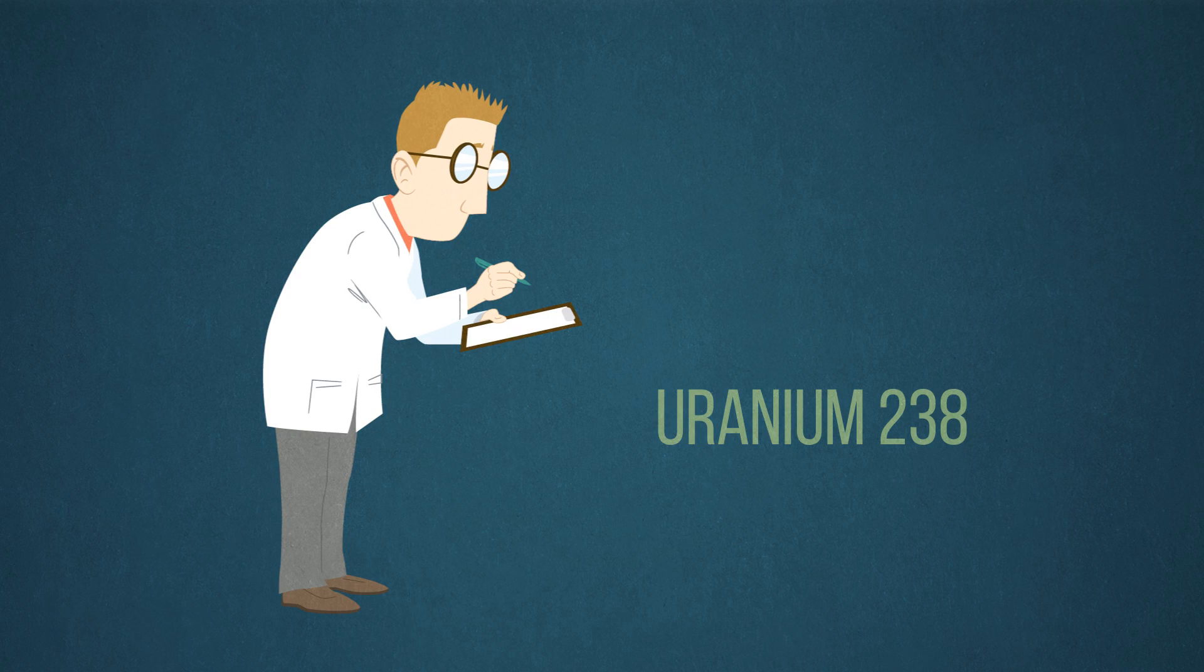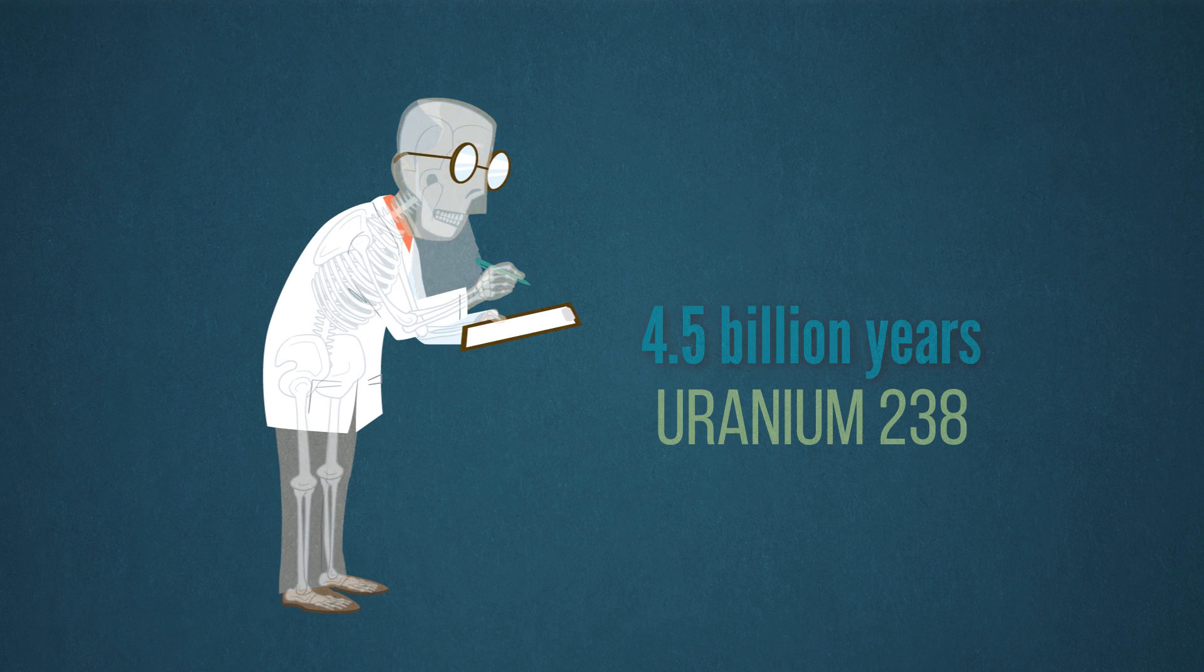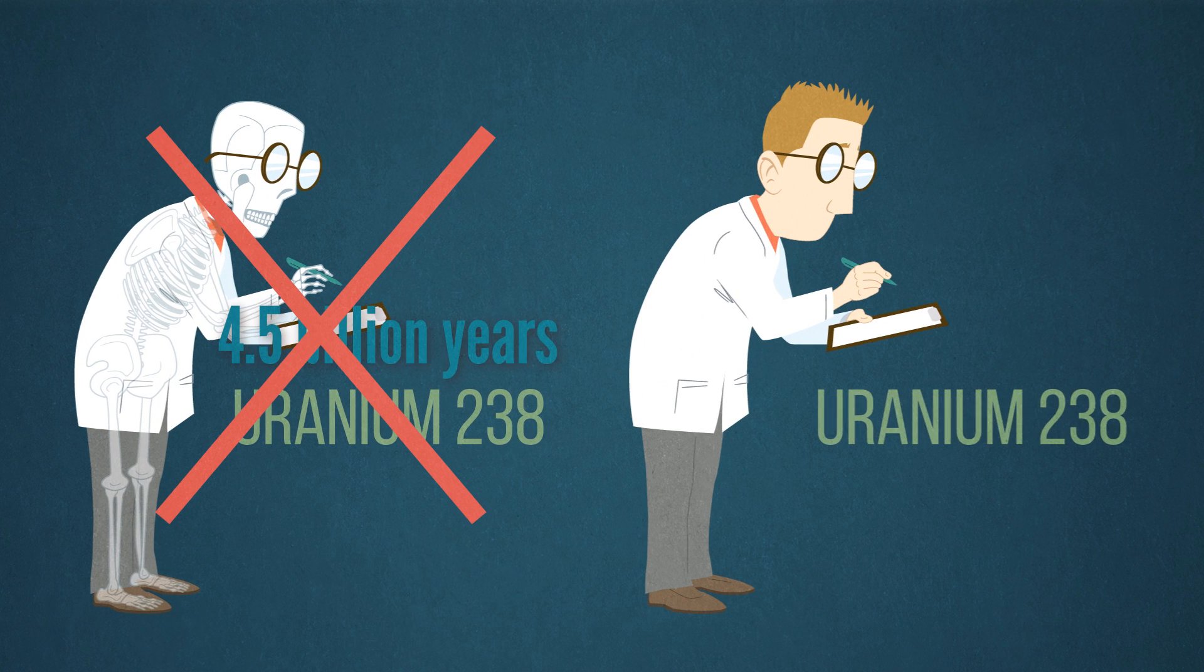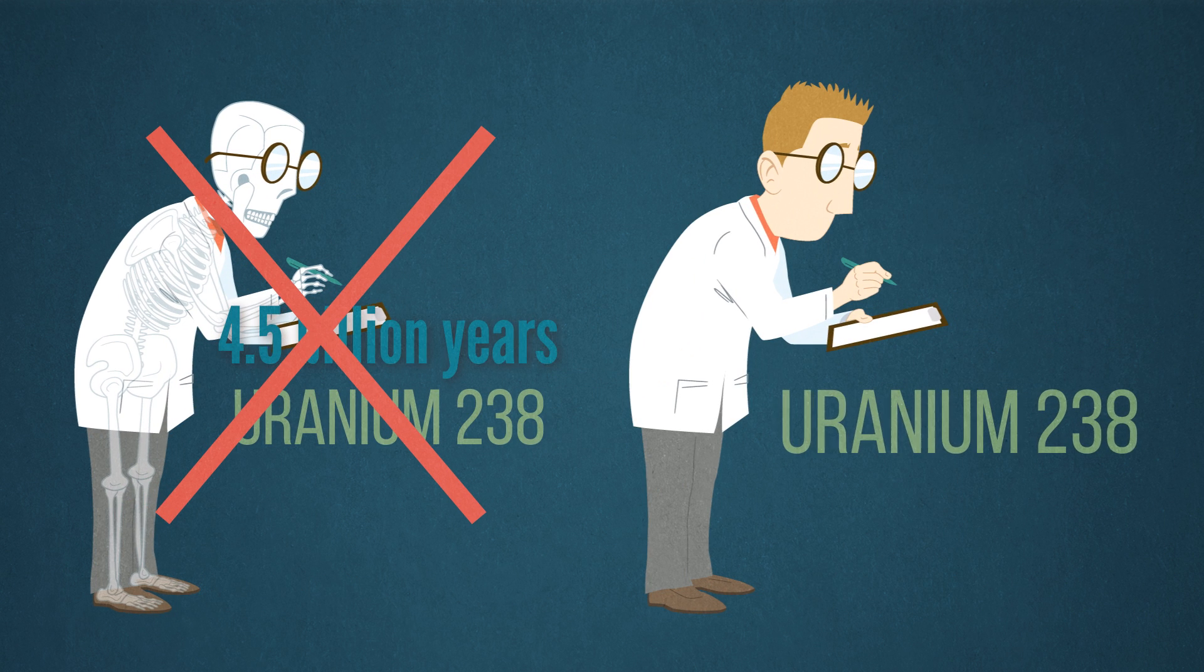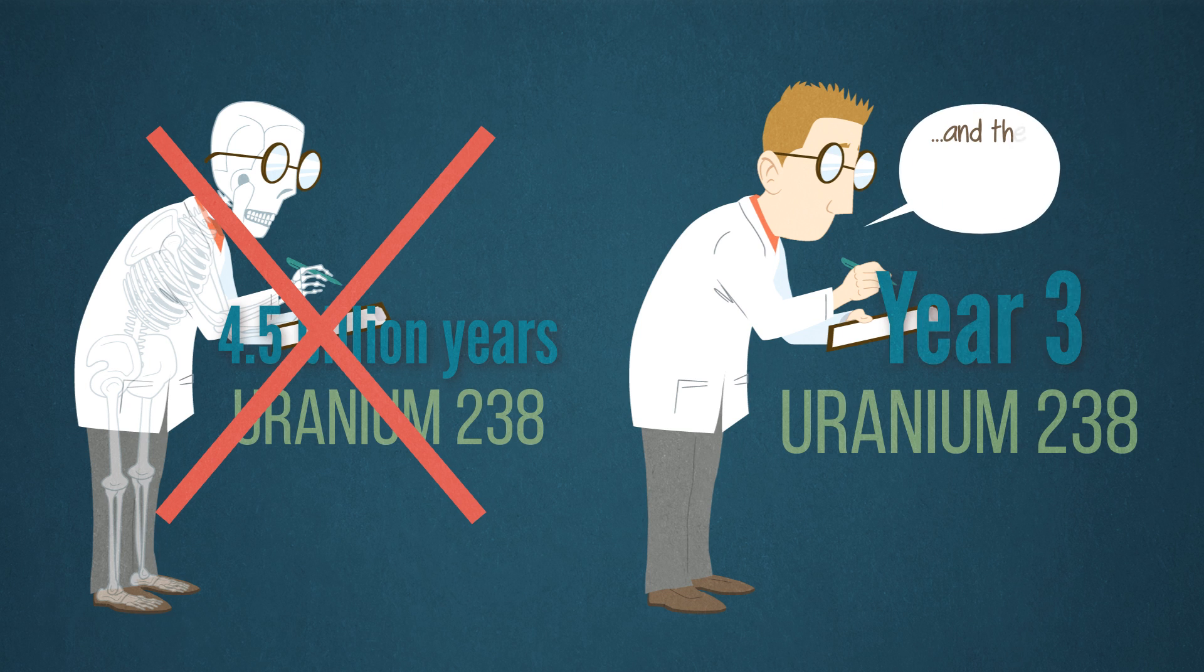So, to measure the half-life of uranium, scientists don't need to wait around 4.5 billion years to watch half the uranium decay into lead. All they need to do is get a large enough sample of uranium, observe the number of decays of uranium into lead over a few years. From this measurement, they can calculate how long it would take for half the uranium to be gone.